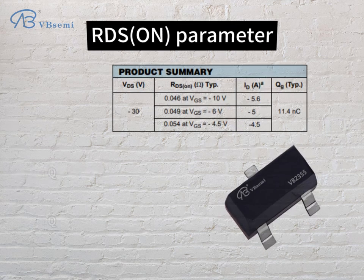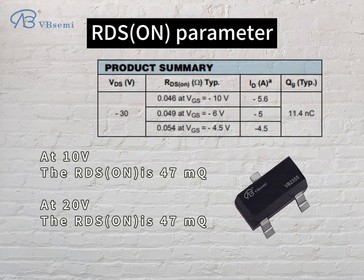RDS(on) parameter: at 10V, the RDS(on) is 47mΩ; at 20V, the RDS(on) is 47mΩ.